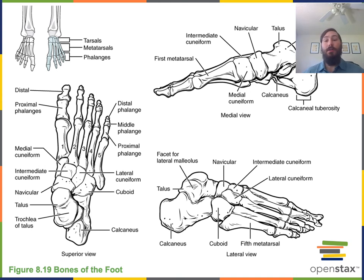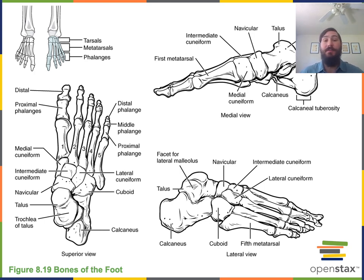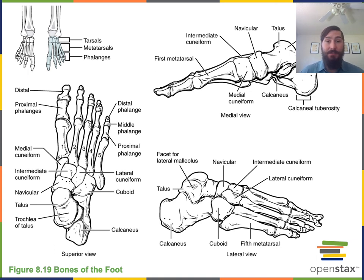The small long bones in the pedal region that contact the tarsals are known as the metatarsals. There are five metatarsals in each foot, 10 metatarsals total. There are 28 small long bones in the digital regions known as the phalanges. Similar to the manual digits, the phalanges in the pedal digits are proximal and distal in the hallux, and proximal, middle, and distal in the other four pedal digits.